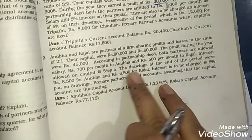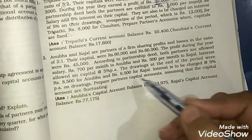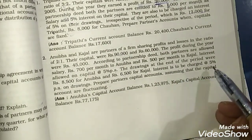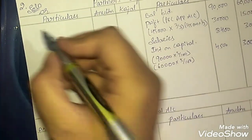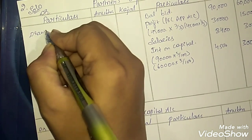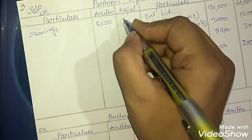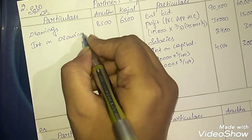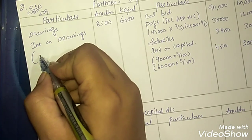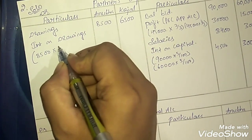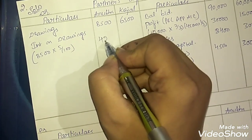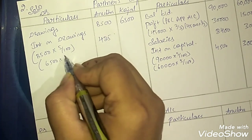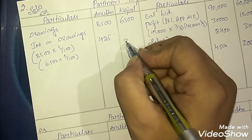The drawings of both partners are given — Rs. 8,500 for Anubha and Rs. 6,500 for Kajal. Along with that, interest on drawings is 5% per annum. Drawings go on the debit side since the partner has to pay them back. Interest on drawings: 8,500 × 5/100 = Rs. 425 for Anubha, and 6,500 × 5/100 = Rs. 325 for Kajal. Everything from the question is now recorded.